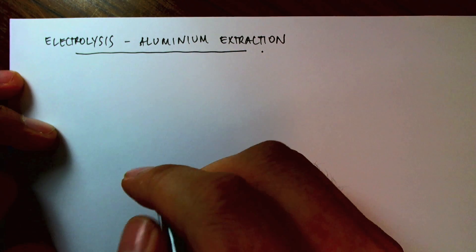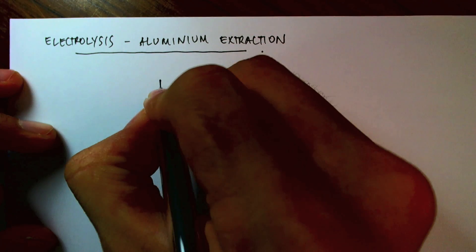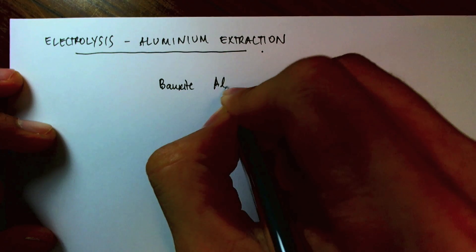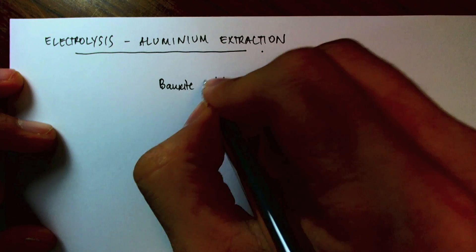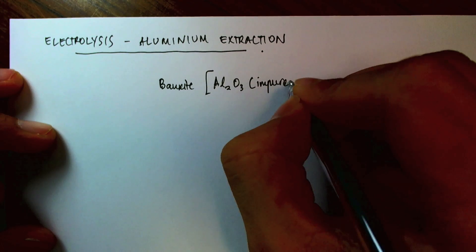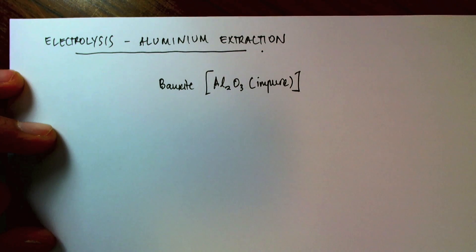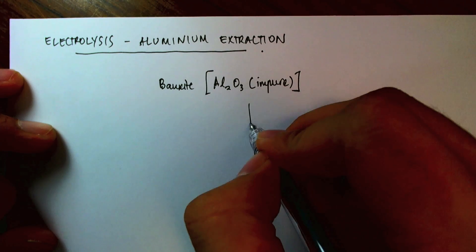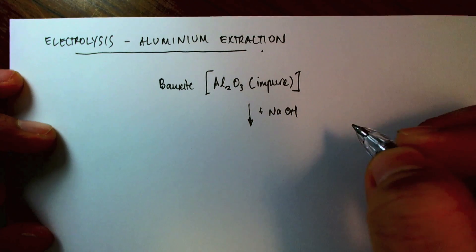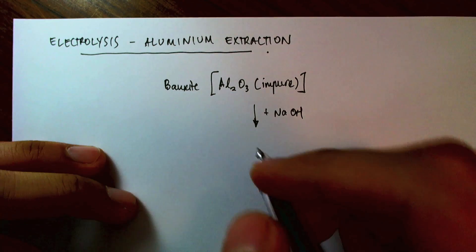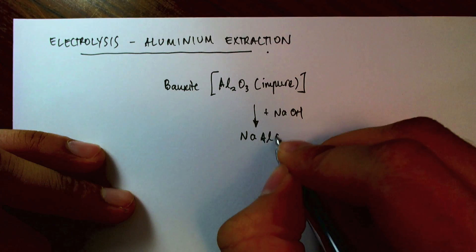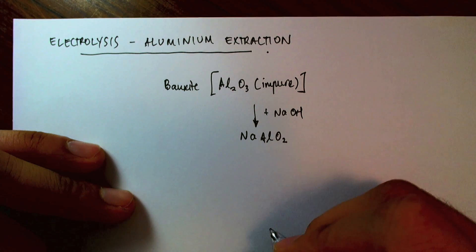So when aluminum is dug up from the ground, the ore is called bauxite, which is impure aluminum oxide, Al₂O₃. So what's usually done is that you take this impure aluminum oxide, you add sodium hydroxide, and you end up with sodium aluminate.